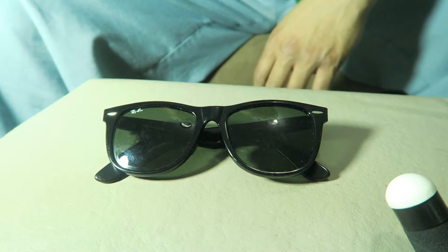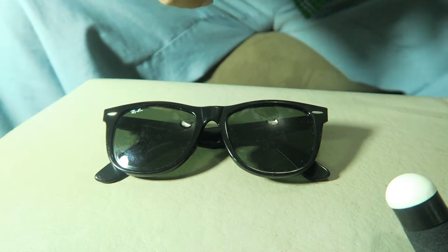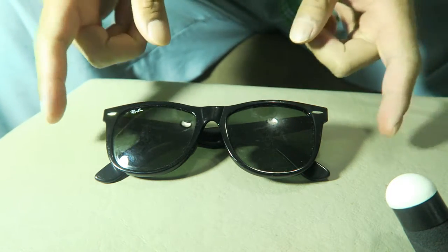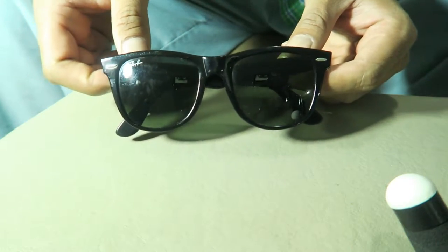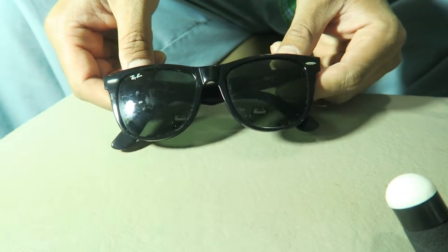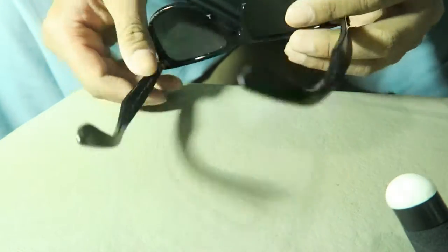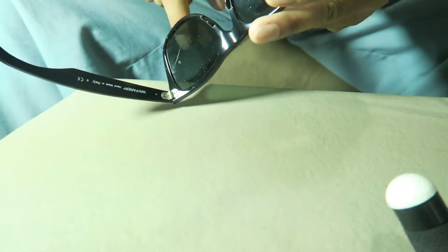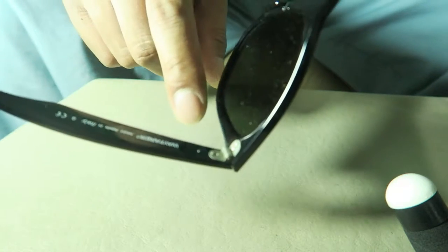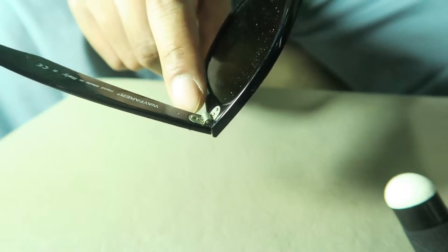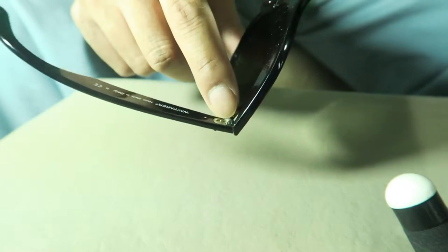What's going on guys, so today I am doing a quick how-to on how to replace the lenses on the Ray-Ban Wayfarer. I believe these are the 2140s. If you need to see a really quick easy way to check if they're authentic or not, it's the hinge right here.